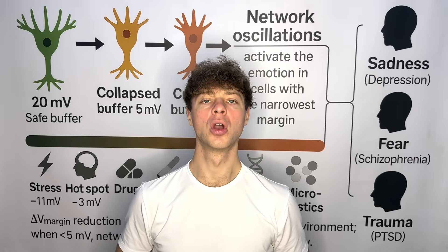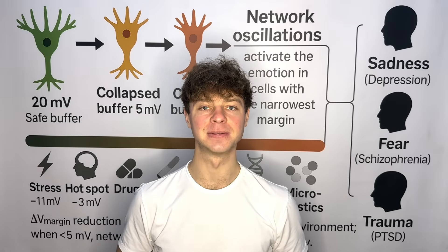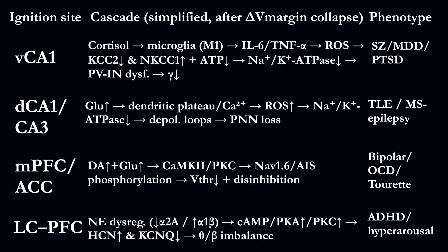But this is not all. According to the excitability margin model, when the excitability margin falls to critical levels, the network becomes vulnerable to spontaneous and uncontrolled activations. The resulting clinical outcome depends on where in the network this collapse occurs — in other words, a single mechanism can produce very different disorders, because different brain regions initiate different neurochemical cascades.